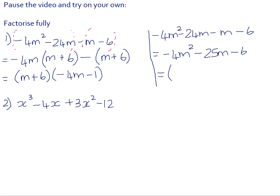That then gives you a quadratic trinomial which you can factorize and your factors are negative 4M minus 1 and M plus 6. If you multiply that out, you will get back to the negative 25M minus 6 trinomial.